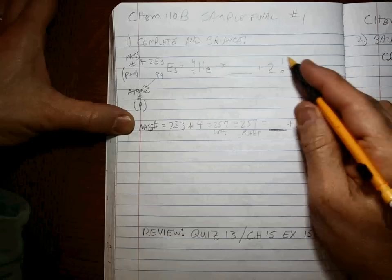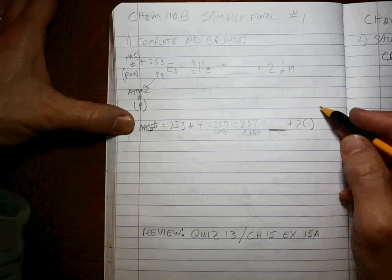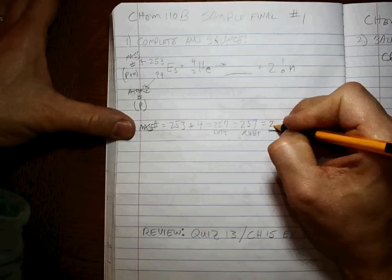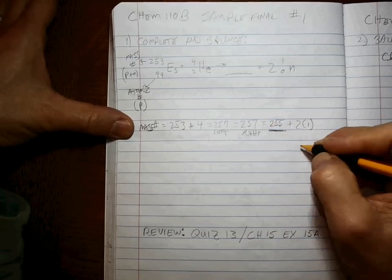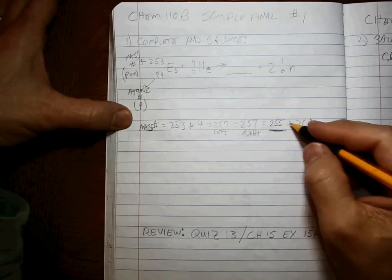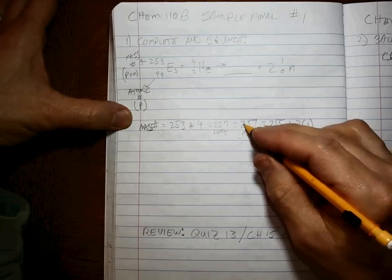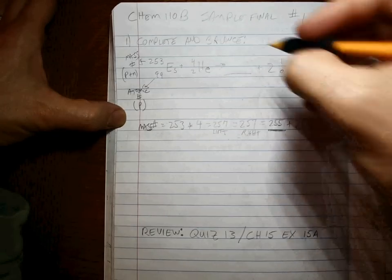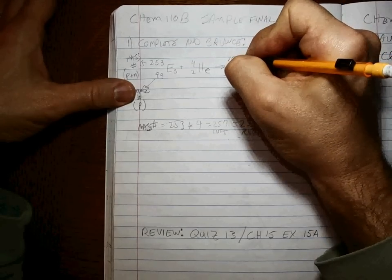Okay, because there's two neutrons, each of which has one in the mass number. Well, that has to be 255, doesn't it? Because 255 plus 2 equals 257. So that means the mass number for whatever goes here is 255.